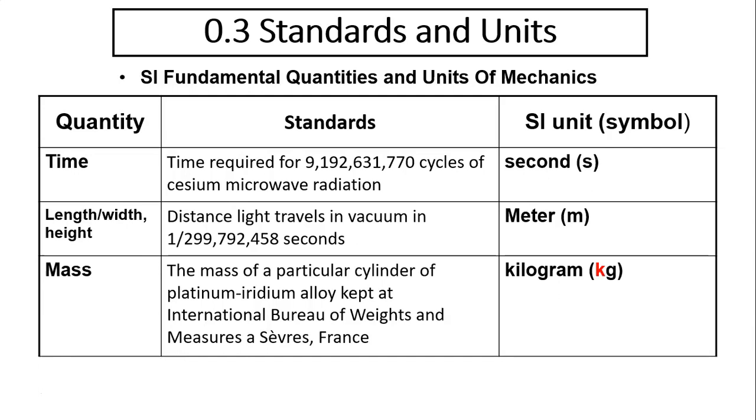We use SI units, international standard units. There are fundamental quantities such as time, length, and mass. We cannot represent these quantities with other quantities - these are the basic ones. Their units are seconds, meters, and kilograms. Standards determine how long a second is, such as the time required for a specific number of cycles of cesium microwave radiation. Similarly, there are standards to determine the length of a meter and the mass of one kilogram.